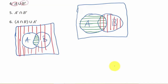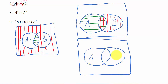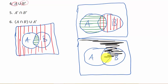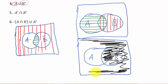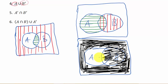Now for the union: everywhere there's a line gets shaded — it's everything from A intersect B combined with everything in A complement. Draw a third diagram and shade everything except the part of A that doesn't overlap with B. That region is the only thing not shaded. Breaking it down step by step like this makes you less likely to make a mistake. I've also got a video on three-set Venn diagrams done the same way.